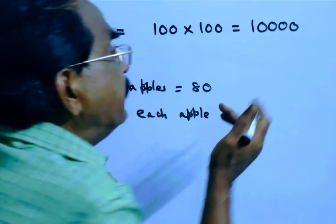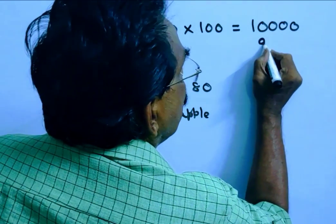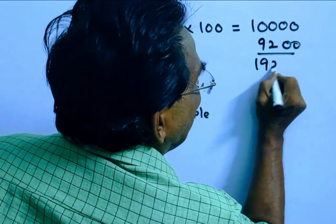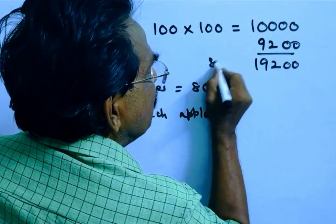That means he gets 9,200 rupees profit. That means the selling price of the whole cart must be 19,200 to have a profit of 92%.